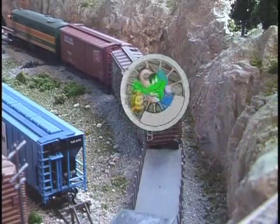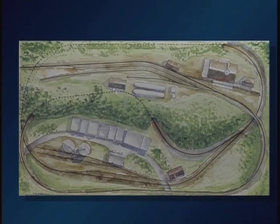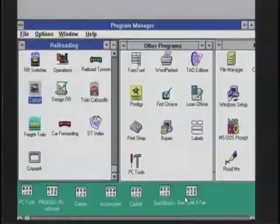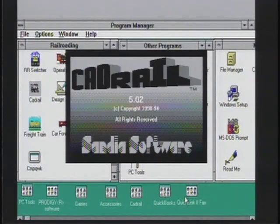This is the track plan shown in the April 1995 issue of Model Railroader. We redrew it using a computer-aided design program called CAD Rail. This made it easier to make minor changes in the plan, lay out the track, and to create the 3D animation at the beginning of this video. CAD Rail is a Windows-based program requiring at least a 386 computer.